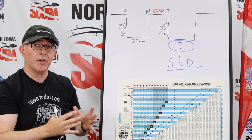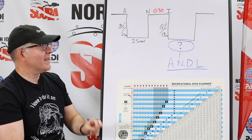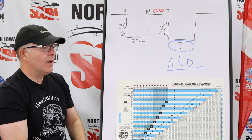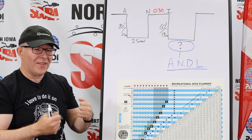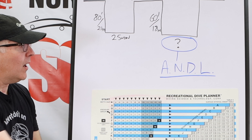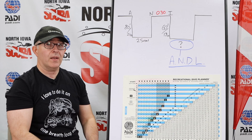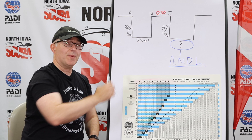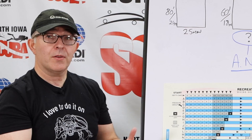On the second dive, those same two divers want to make a dive to 60 feet or 18 meters, and they want to be down there for the longest possible time without having to decompress back to the surface. We call that the adjusted non-decompression limit. It's called adjusted because we also have to take into account the residual nitrogen time that they have from their first dive. So let's figure this out.